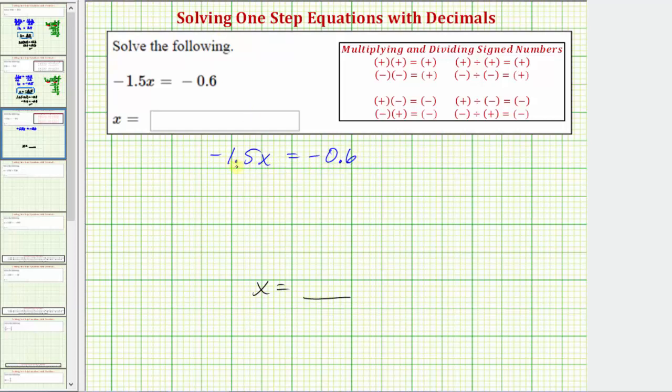Because negative 1.5x means negative 1.5 times x, to solve for x we need to undo this multiplication by performing the inverse operation, or opposite operation of multiplication.